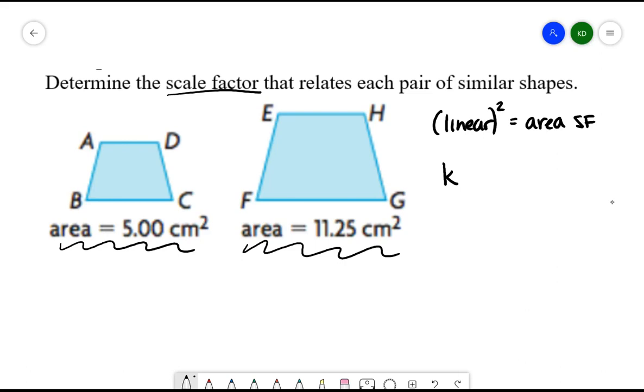When I take the linear scale factor and I square it, I'm going to be left with the area scale factor. Because I have two areas, I'm able to actually figure out what that area scale factor is. So k squared is going to be equal to 11.25 divided by 5. When we simplify that fraction, what we're going to get here as a decimal is 2.25. So this would be the area scale factor.